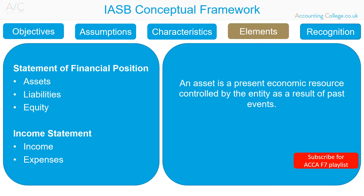Assets can be tangible or intangible. A tangible asset is an asset that has a physical form — tangible assets include both fixed assets such as machinery, buildings and land, and current assets such as inventory. An intangible asset is an asset without physical form — intangible assets include corporate intellectual property such as patents, trademarks and copyrights, or the likes of goodwill and brand recognition.